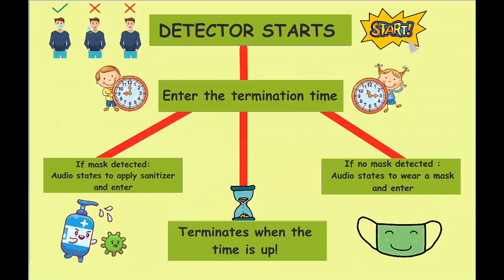The basic flow of our system is that when we start the detector, it asks us for the termination time. If the person being detected has a mask on, he or she is asked to put sanitizer and allowed to enter the premises. If the person doesn't have a mask on, he or she is asked to wear a mask in order to enter. As the termination time reaches, the system stops detecting further.